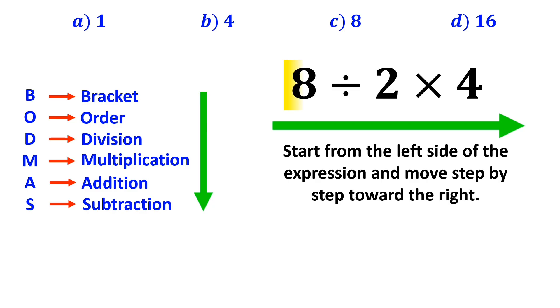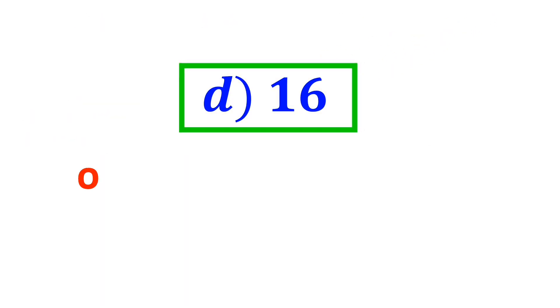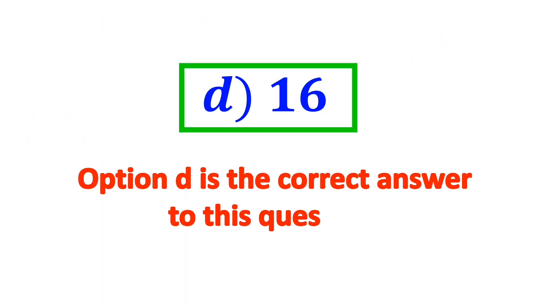So, first we perform the division between 8 and 2, which simplifies the expression to 4 multiplied by 4. Finally, the value of this expression will be 16. Therefore, option D is the correct answer to this question.